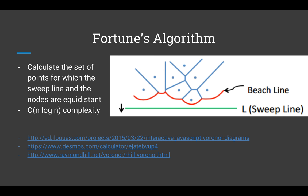But there's a better way. It's called Fortune's Algorithm, after Stephen Fortune, who published his paper 'A Sweep Line Algorithm for Voronoi Diagrams' in 1986. His algorithm employs a sweep line that moves from one end of the diagram to the other. By calculating the set of points for which the sweep line and the nodes are equidistant, we find the beach line. The complexity of Fortune's algorithm is better—the big O is O(N log N).